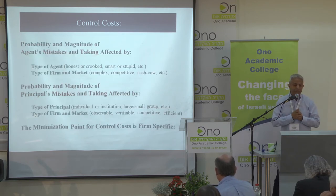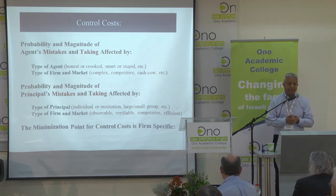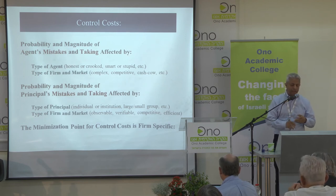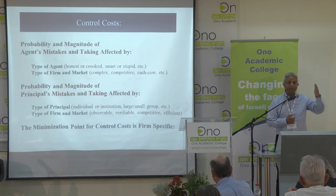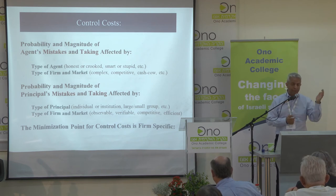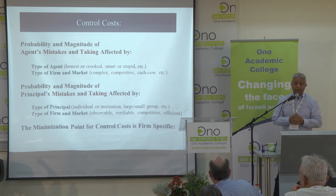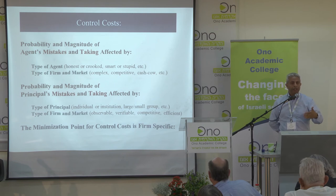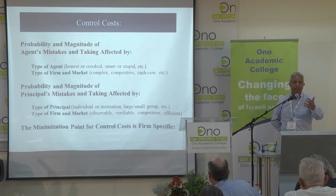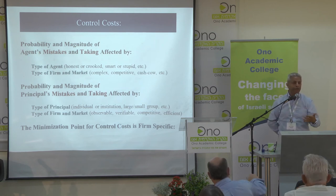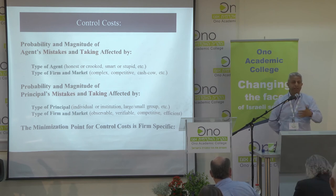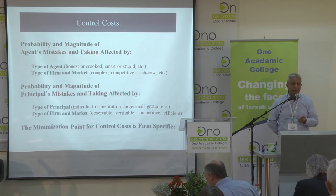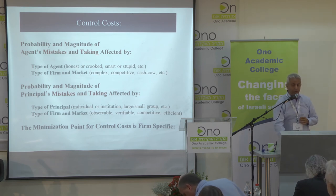The probability and magnitude of agent mistakes and takings will be affected by the type of the agent (honest or crooked), the type of the firm and the market (whether competitive or complex). In some markets, a mistake only decreases the rate of return; in some, it causes bankruptcy. For the principal, the probability and magnitude of principal's mistakes and takings is also affected by the type of the principal (individual or institution) and the type of firm and market. Since the principal is monitoring the agent, it depends on what information you can get to determine whether the agent is honest and effective. If you rely on indirect proxies like stock market prices, and if the market is myopic, you might make mistakes in evaluating the agent's performance.